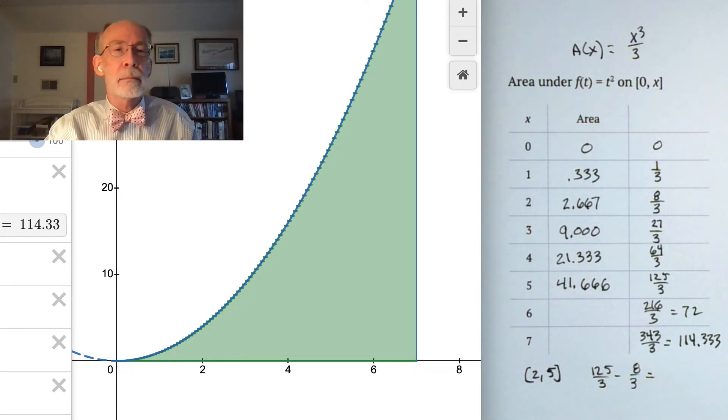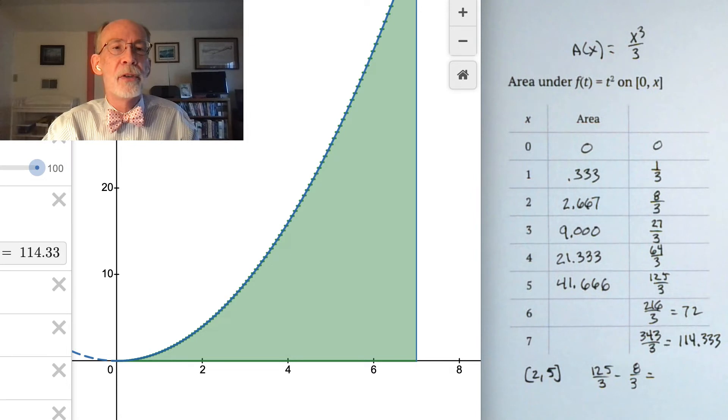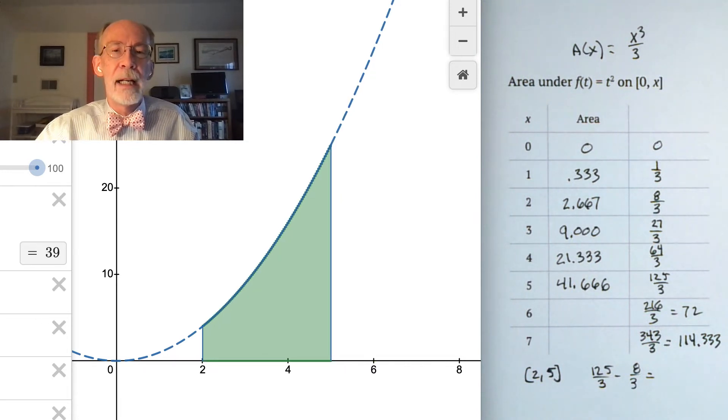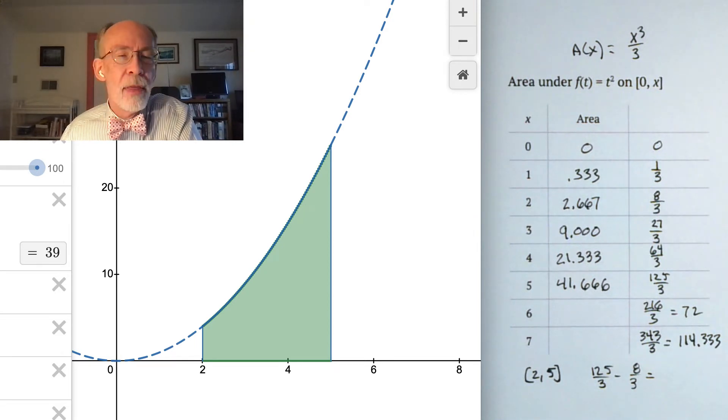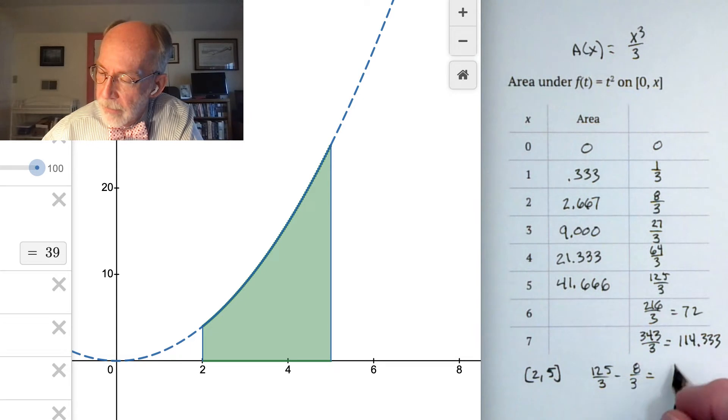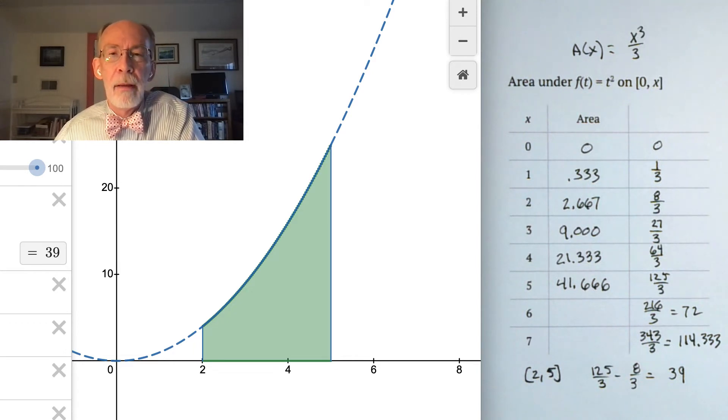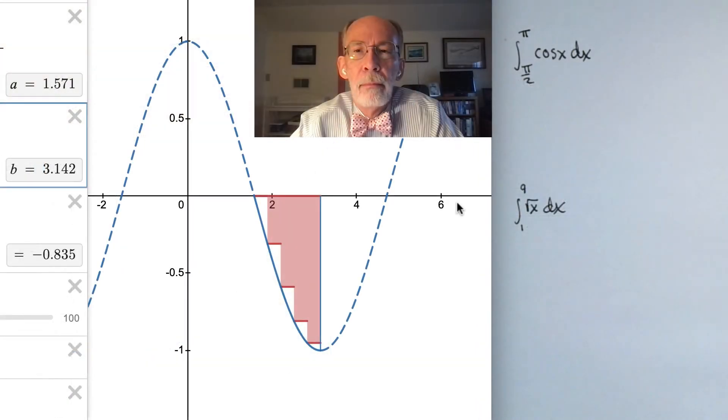Well, let's see. So I'll change this from what I have here at the moment, I'll change it to the interval from 2 to 5, and what I see is 39. Is that 125/3 minus 8/3? Yes, it is.